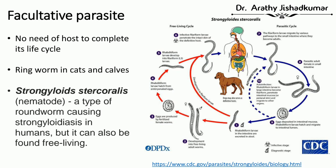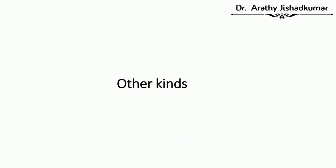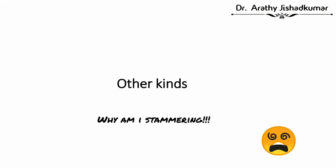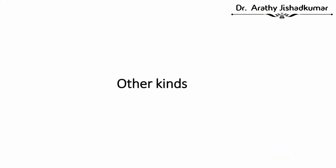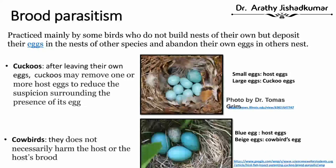Other than location-based and life-cycle-based classifications, there are other types of parasitism depending on lifestyle. For example, brood parasitism is usually observed in birds — for example, cuckoos.